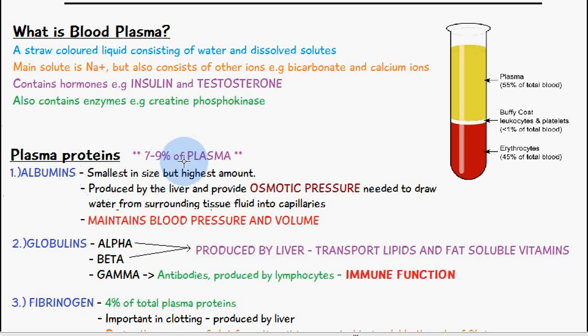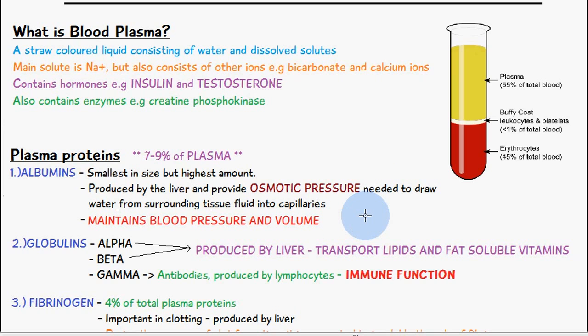Albumins are the smallest in size but the most common, and are produced by the liver. They provide the osmotic pressure needed to draw water from surrounding tissue fluid into the capillaries, helping to maintain blood pressure and volume.